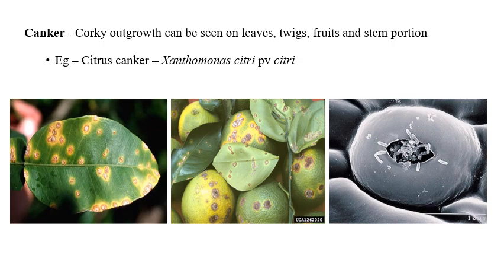The next symptom is canker. Here, corky outgrowth can be observed on leaves, fruits, and twigs. Wherever the corky pustule-like structures appear, a yellow color halo surrounds them, and local discoloration is observed. The example is citrus canker, caused by Xanthomonas axonopodis pv. citri. This bacterium enters plant cells through stomata.